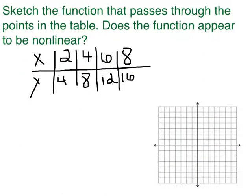Now you want to sketch the function that passes through the points of the table and determine if it is linear or not linear. So I'm going to count by 2's to graph these, because my graph is so small. When x is 2, y is 4. And when x is 4, y is 8.